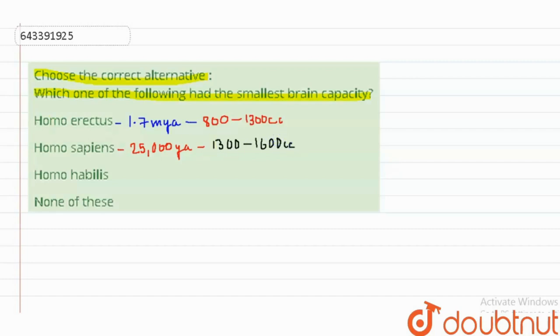Now Homo habilis. Homo habilis arose around 2 million years ago and they had the brain capacity of 700 cc.